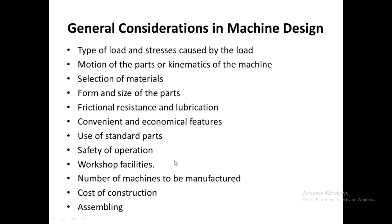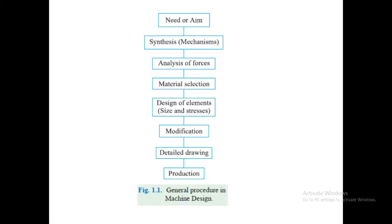Other considerations include the facilities available in the workshop or industry for manufacturing the different components, the number of machines to be manufactured, the cost of construction involved, and the assembling process. These are the general considerations followed in machine design.